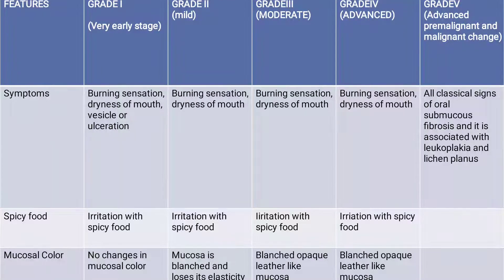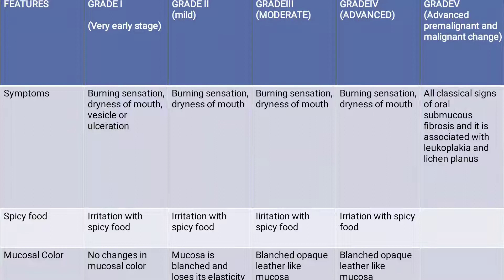Looking at symptoms across grades: burning sensation of mouth, vesicles, and ulceration are present in grade one through grade five. However, in grade five, all the classic signs of oral submucous fibrosis are present and it is also associated with leukoplakia and lichen planus. Eating spicy food will irritate the mucosa in all grades of OSMF, from grade one to grade five.